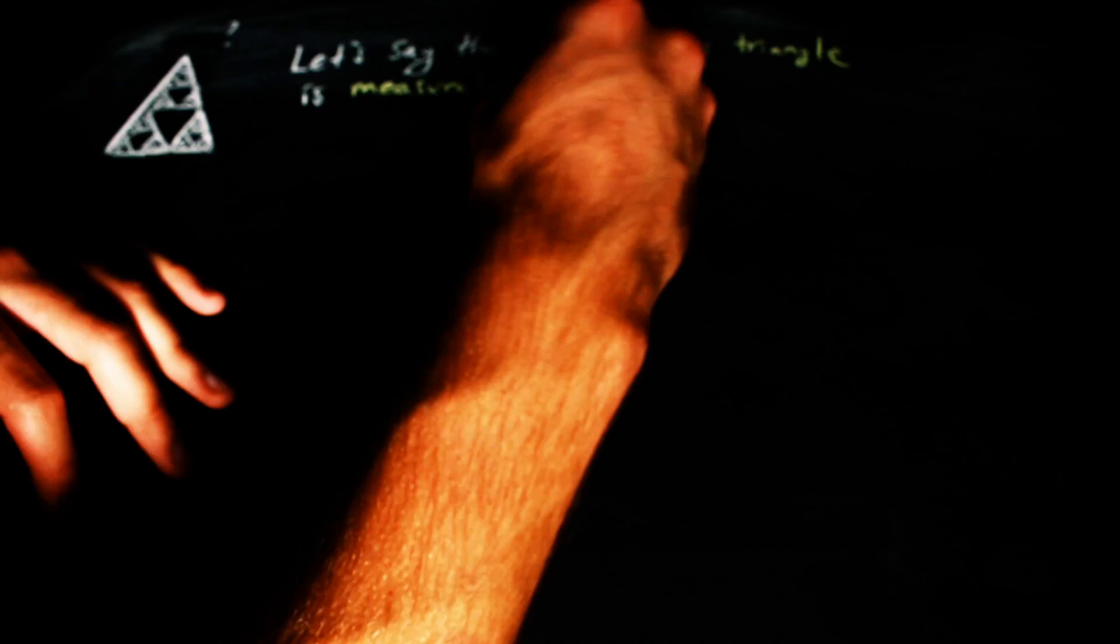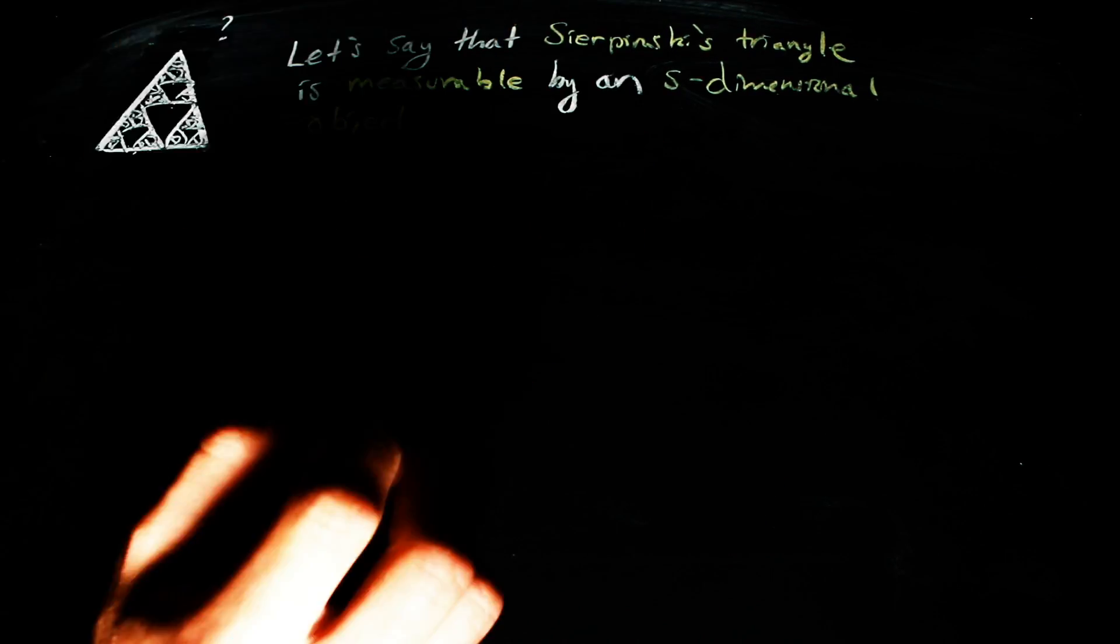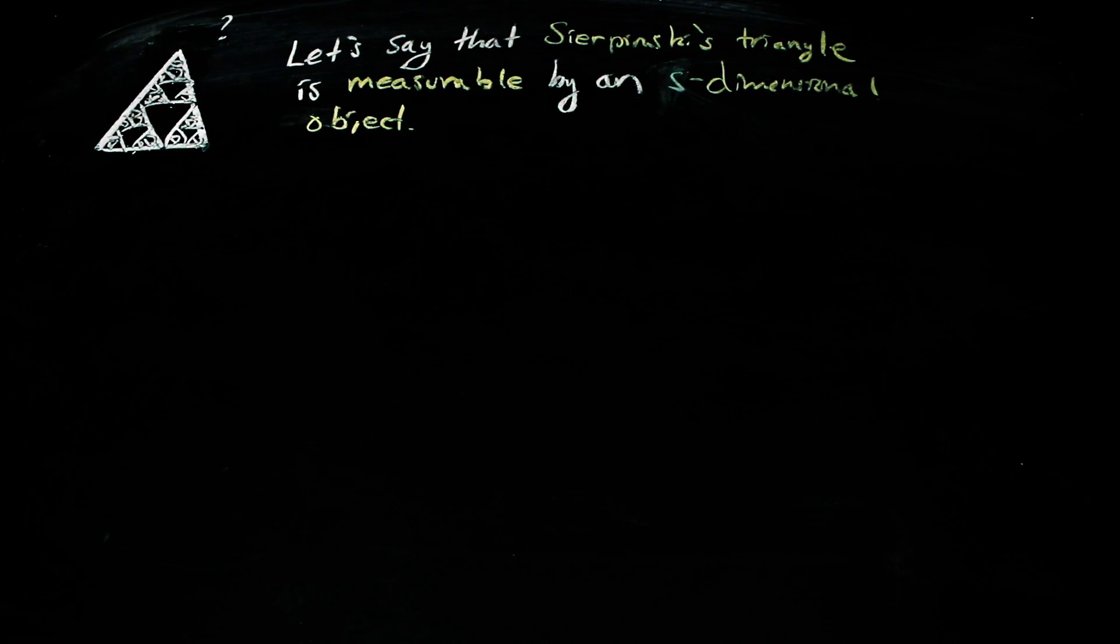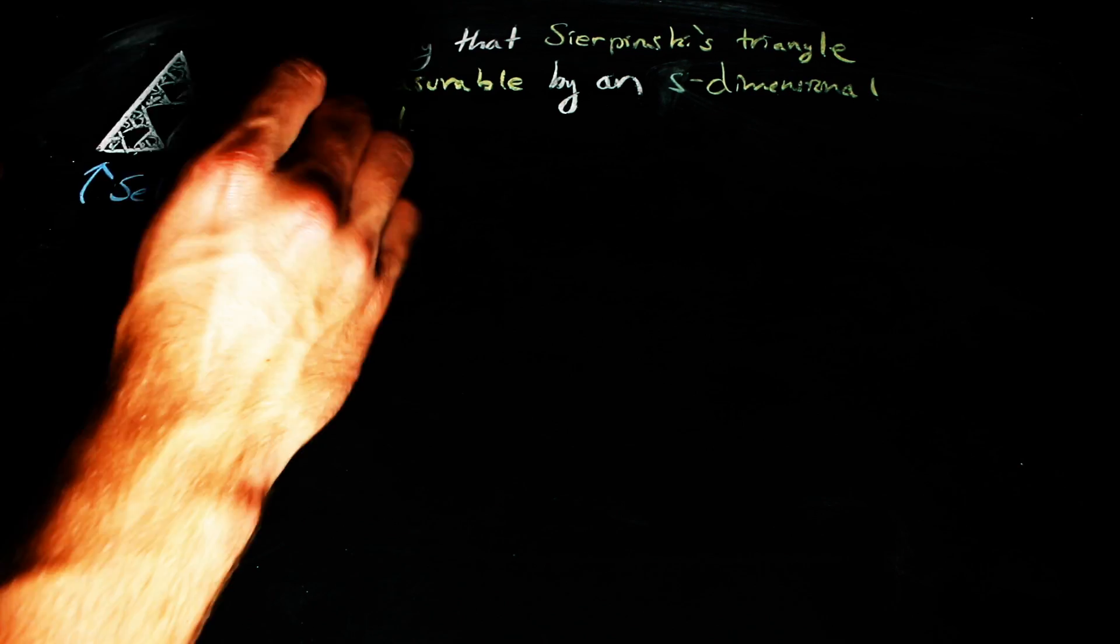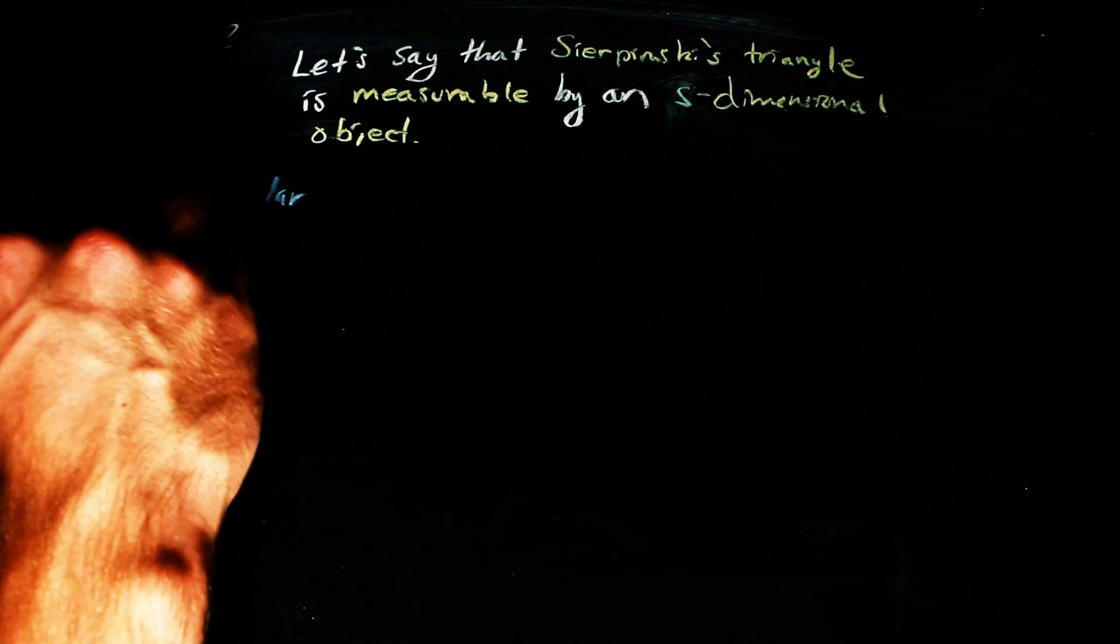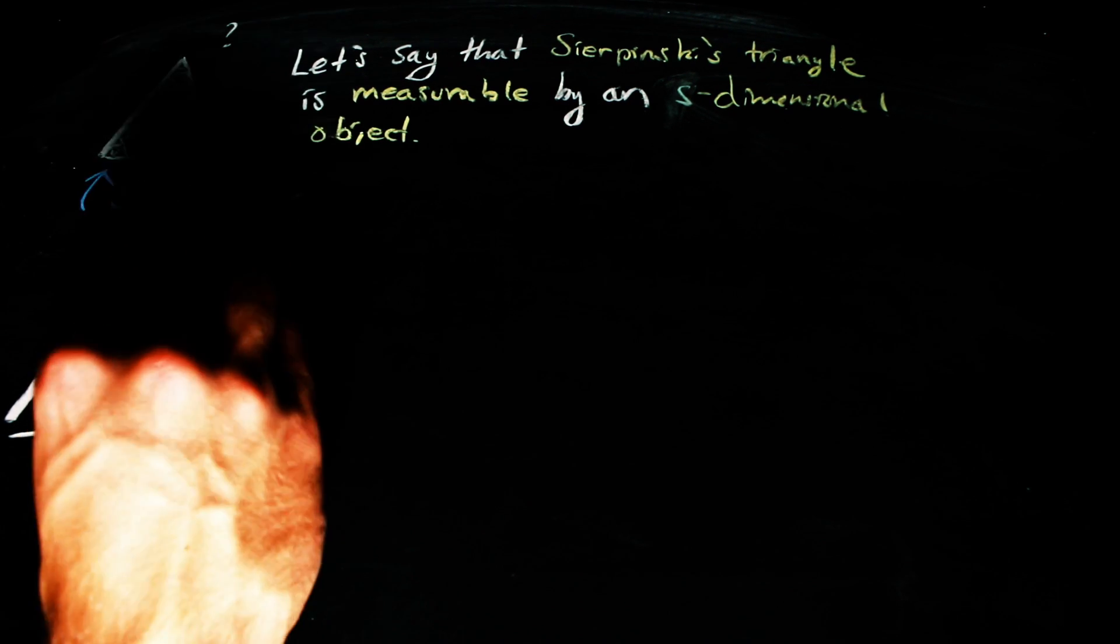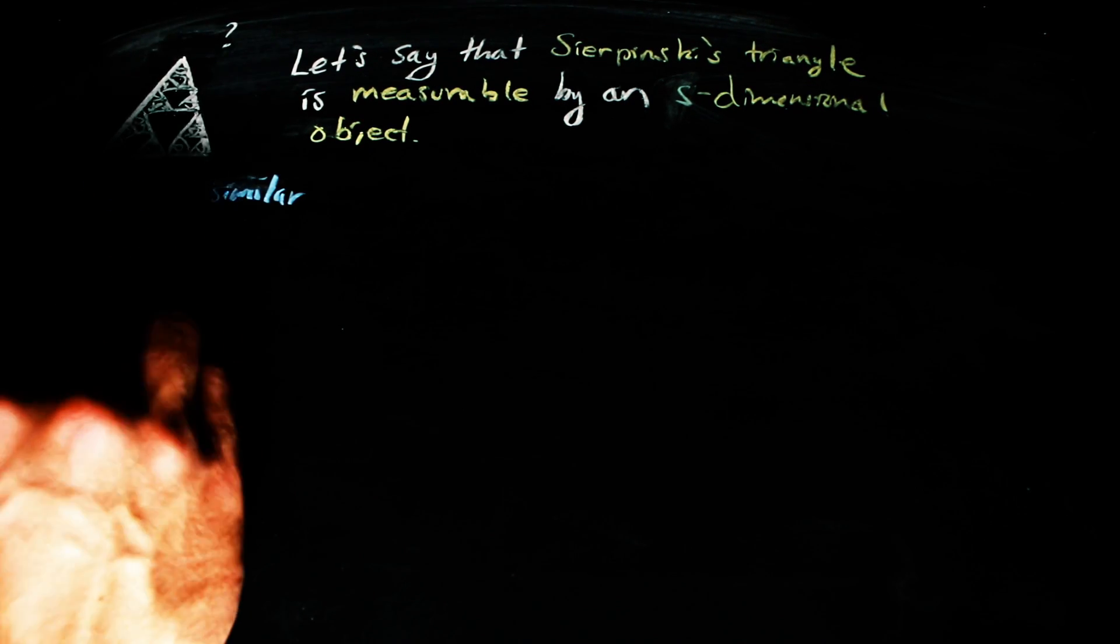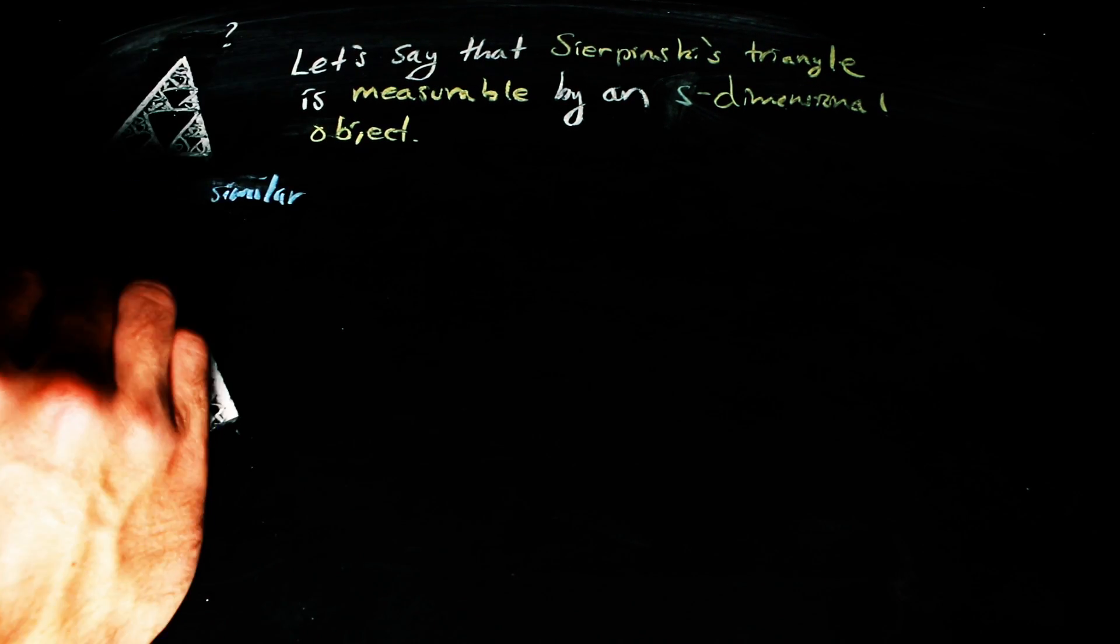Let's say that the correct object to measure this set with has dimension S. Sierpinski's triangle also has a property called self-similarity. That is, whenever you scale up the triangle, you get more detail in the triangle. So, we should try arguing by talking about its properties of scaling.